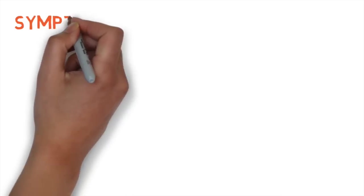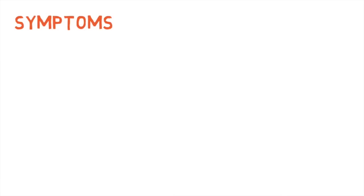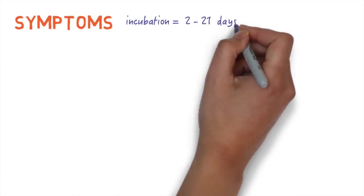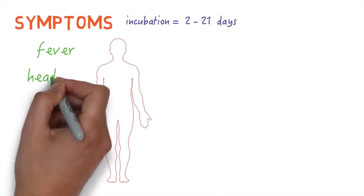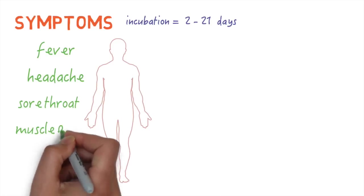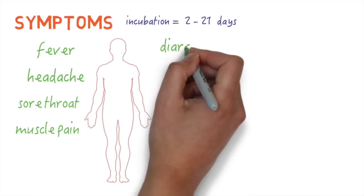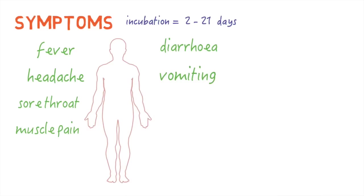Once the virus infects someone, it can take anywhere from 2 to 21 days for symptoms to appear. The early symptoms can be quite nonspecific and can include fever, headache, sore throat, and muscle pain. People then go on to develop diarrhea and vomiting, which can lead to massive amounts of fluid loss from the body.